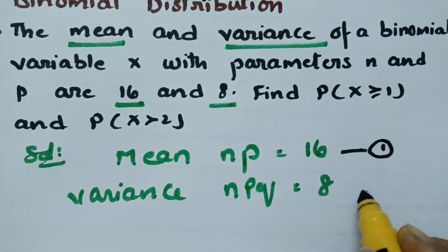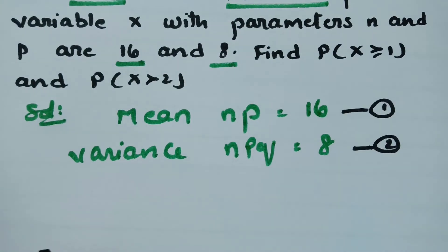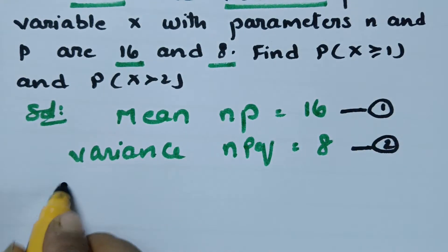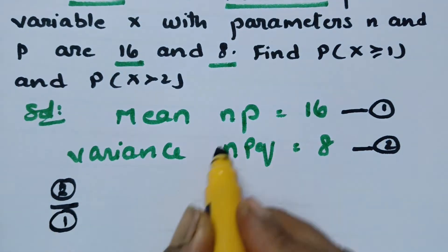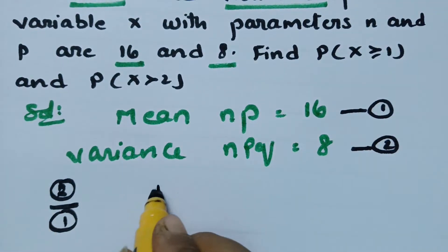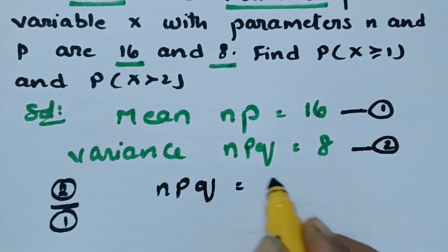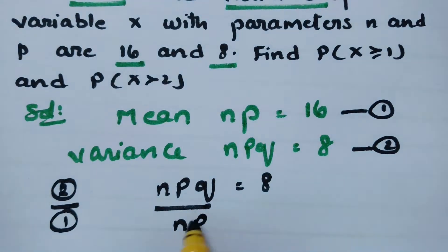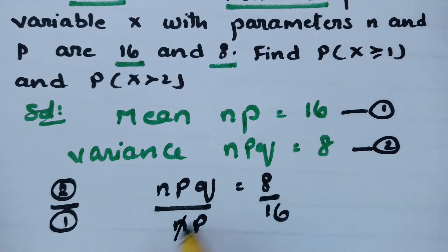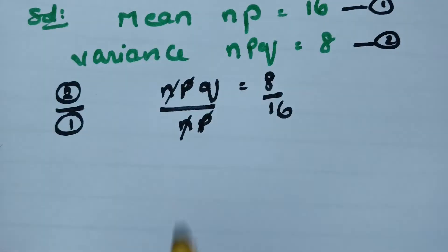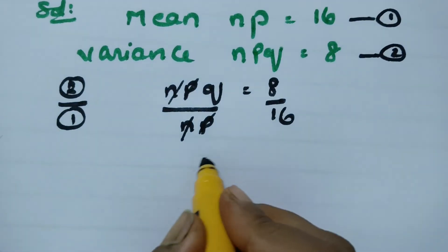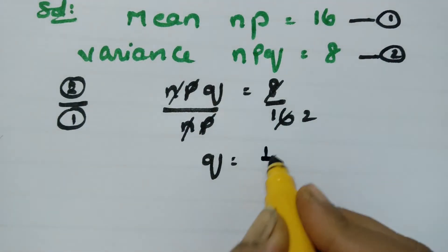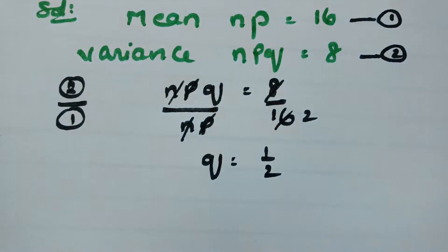Now, if we divide equation 2 by equation 1: npq equals 8 divided by np equals 16. If we cancel np, the q value will be 8 divided by 16, which is one-half. So q is equal to one-half.